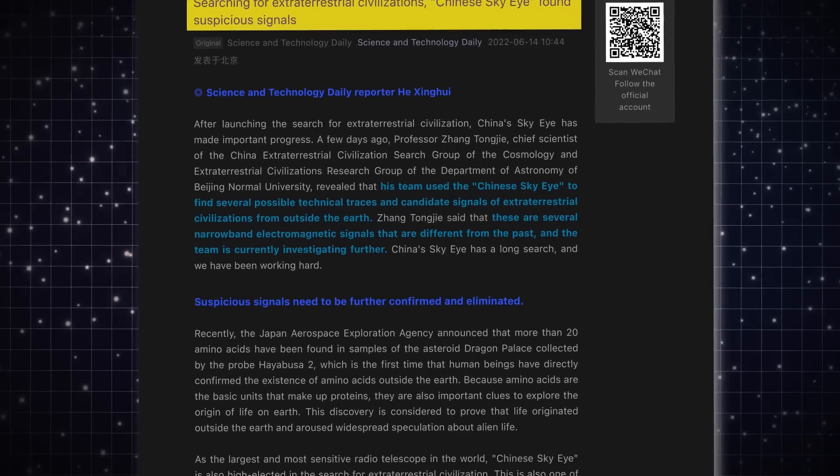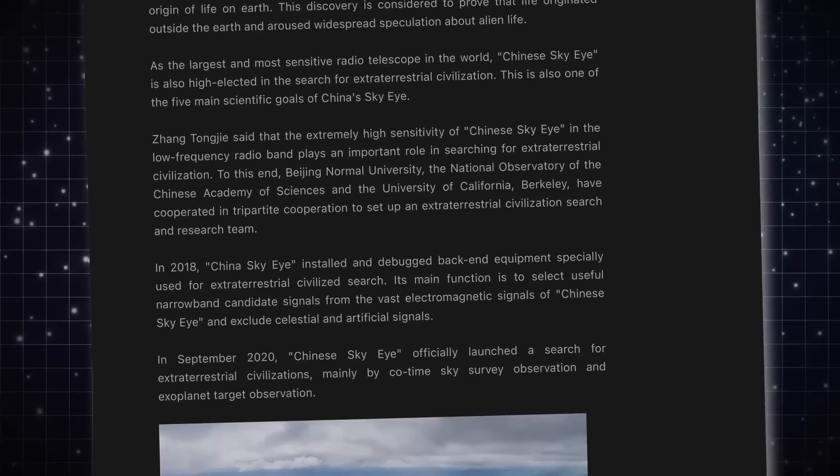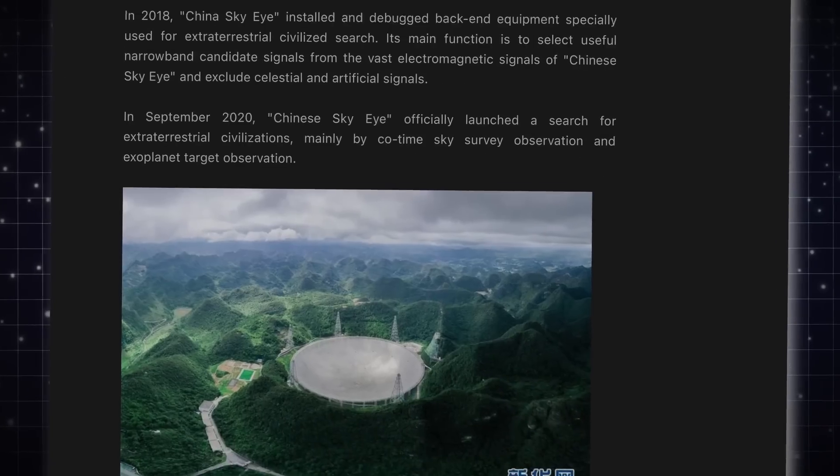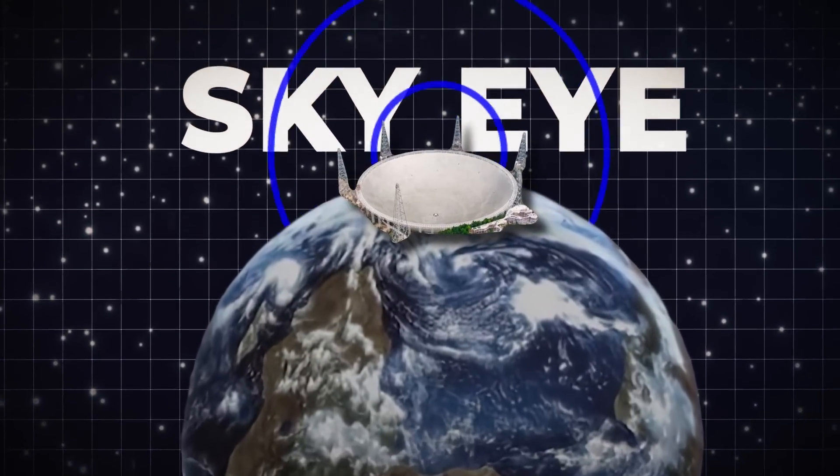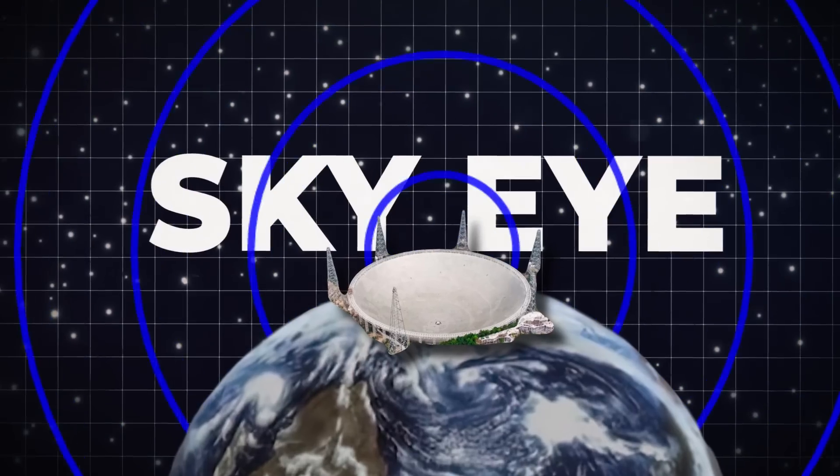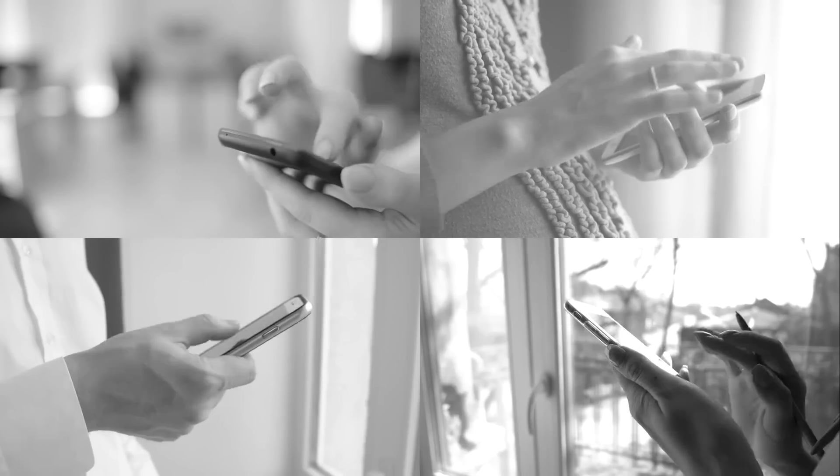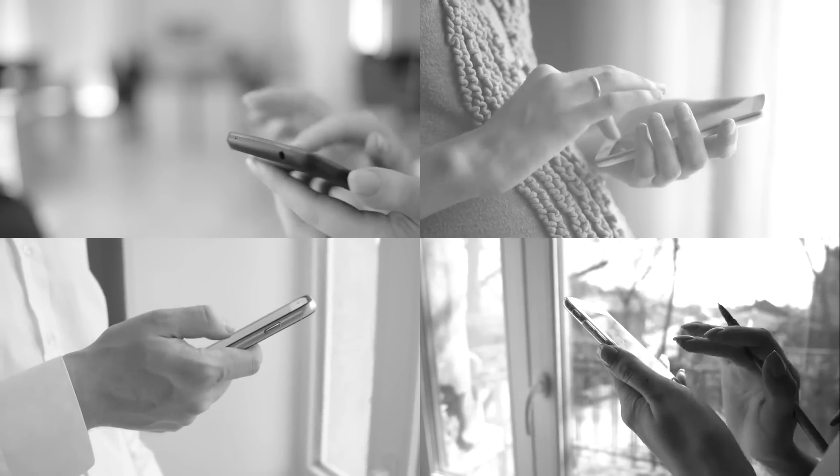The chairman of an extraterrestrial civilization search team established in China in 2020 was quoted in the article, who claimed that the telescope's narrowband electromagnetic emissions were different from earlier signals and were currently being looked into. Inexplicably, the story was taken off the internet after other outlets picked it up.